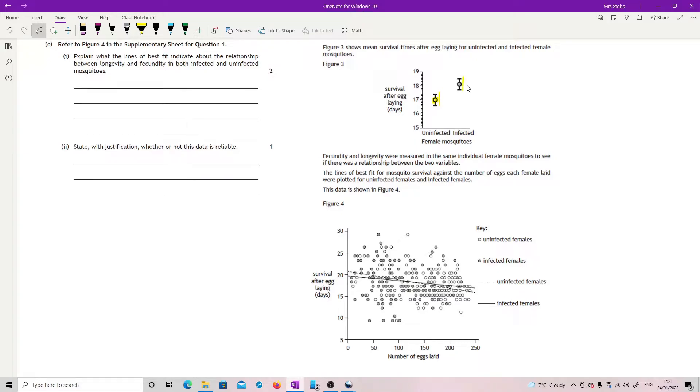Fecundity and longevity were measured in the same individual female mosquitoes to see if there was a relationship between the two.